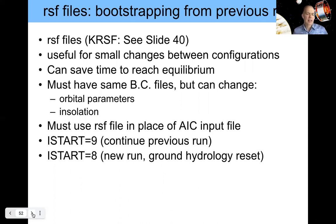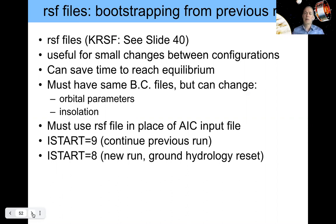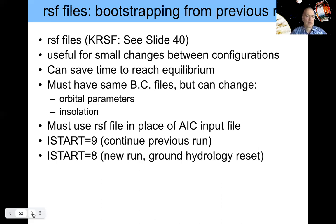Checkpoint and restart files: these are generated periodically and can be used to restart runs. They're useful for small changes between configurations — if you're doing a parameter sweep and don't expect the surface temperature to differ much, you can use an RSF file saved from a previous run already in equilibrium, saving time to reach equilibrium again. If you change your solar insolation by 2–5% this is the perfect time to use an RSF file. To use it, the run decks must have the same boundary condition files, but you can change orbital parameters, insolation, and a few entries in the parameter section without problems.